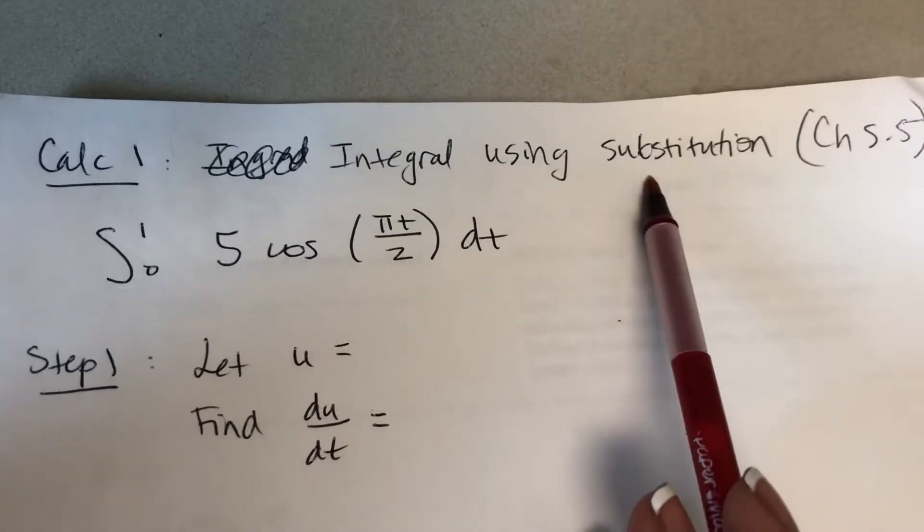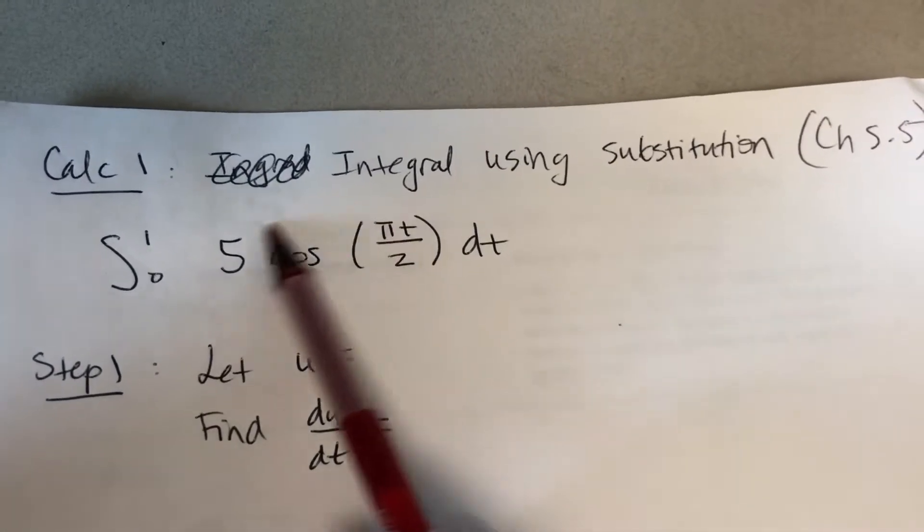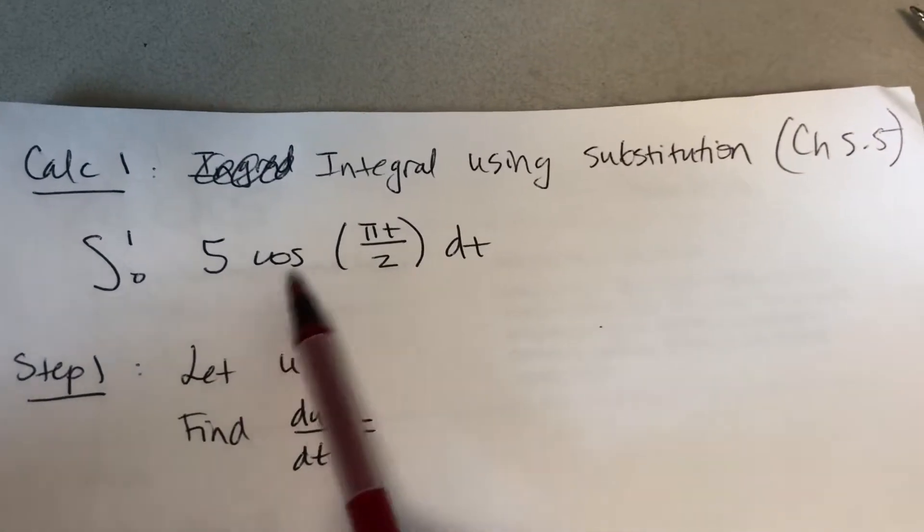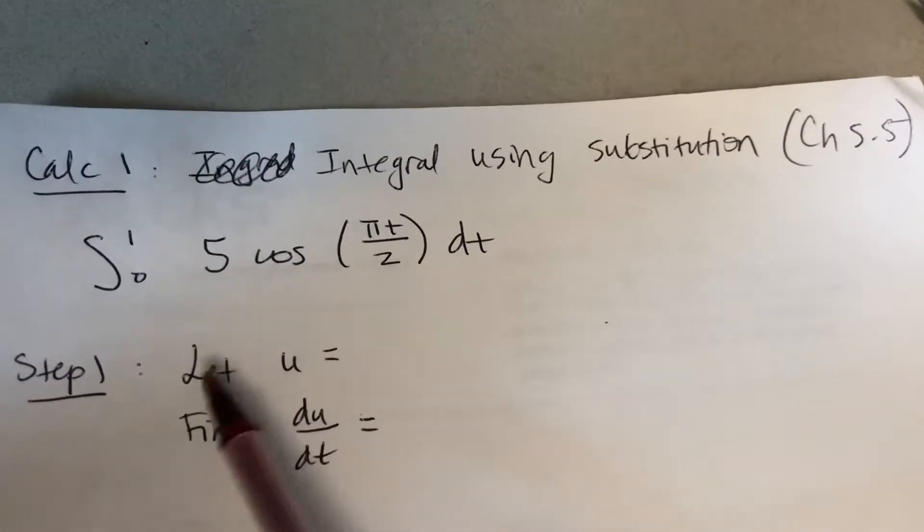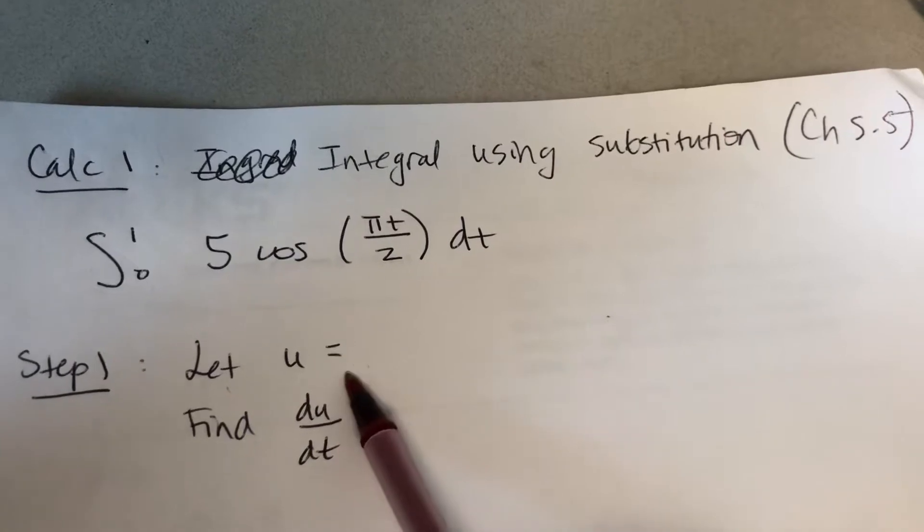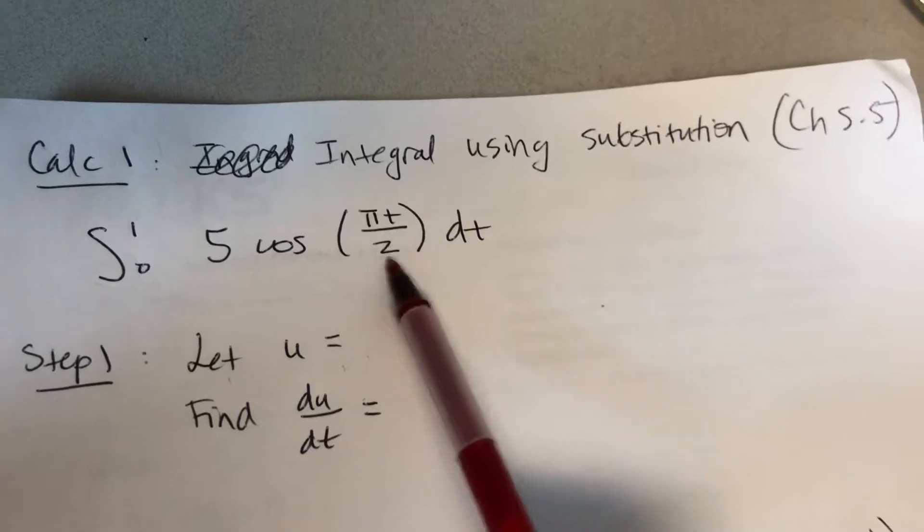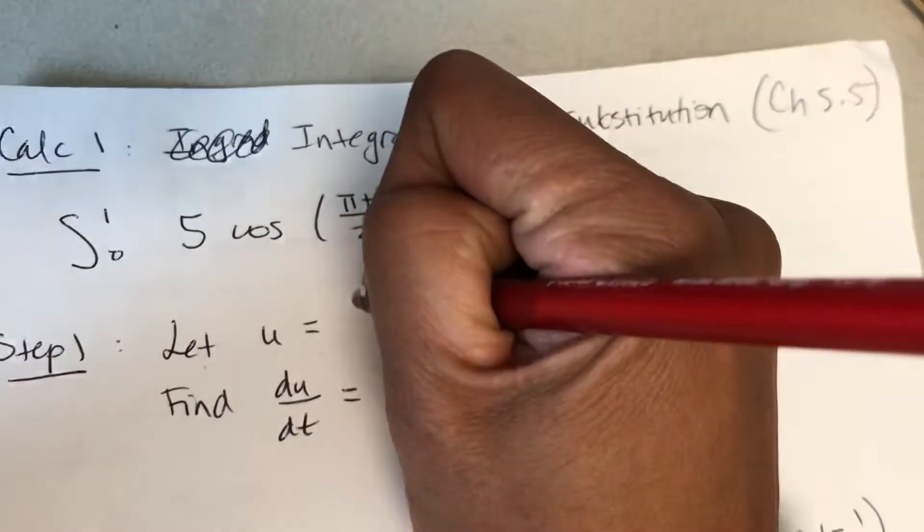That's when we use substitution to make the function look simpler so that we can find the antiderivative. Here you're gonna let u equal to what I call the ugly part, or the part that makes it difficult or challenging. It's the inside of cosine that makes it difficult or challenging.